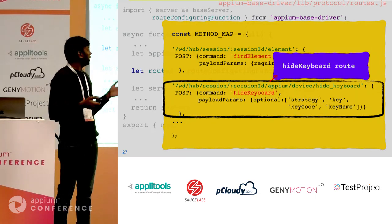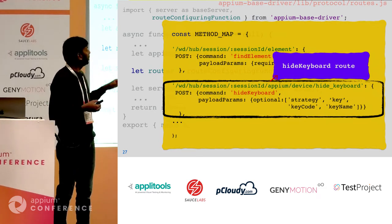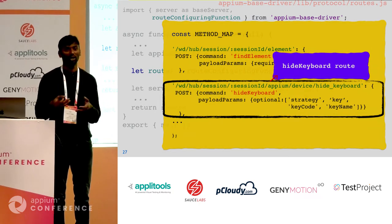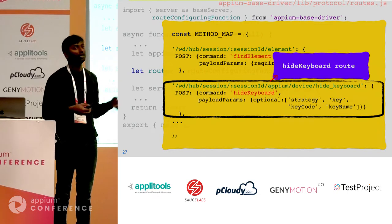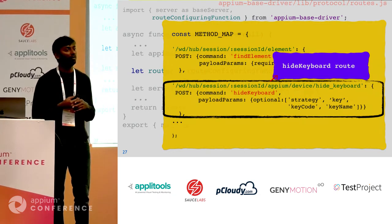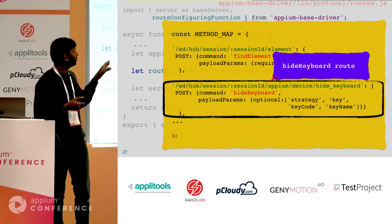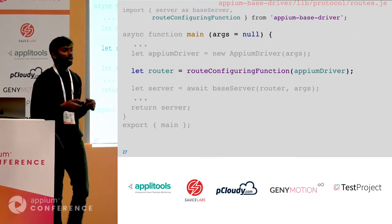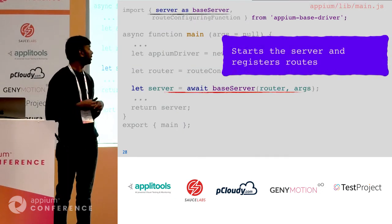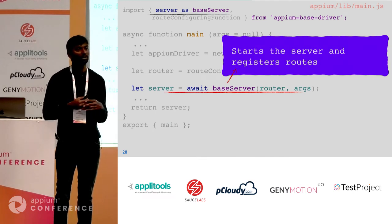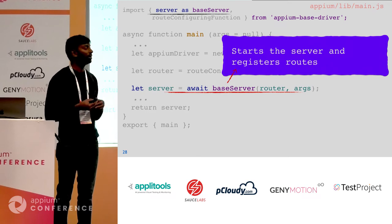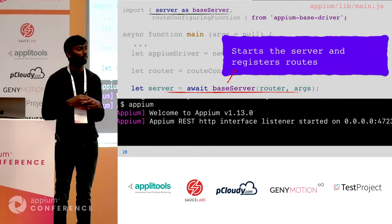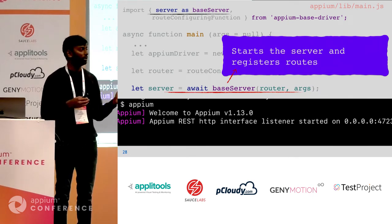When the server registers all these routes, it knows all the possible API paths and where each is implemented. When you make a request to the server to execute a find element, it just goes and executes the find element function. Finally, we invoke a function called base server, which starts the API server and registers all the routes we just saw. With that, we have the API server up and running. That's what happens in the backend when you start the Appium server.